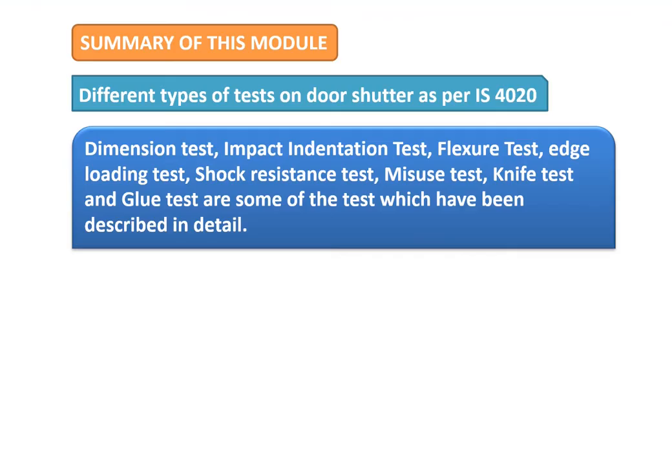To summarize, this module has discussed the different types of tests for door shutters as described in IS 4020, covering how observations need to be recorded and the various test types including dimension test, impact indentation test, flexure test, edge loading test, shock resistance test, misuse test, knife test, and glue test.